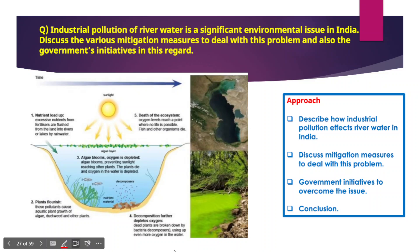Hello everyone, welcome to Bajirao IAS Academy. In the previous lecture we discussed a few questions from gender studies paper 2, and in this session we will be discussing a few more questions. The first question we are going to discuss is: industrial pollution of river water is a significant environmental issue in India — discuss the various mitigation measures to deal with this problem and the government's initiatives in this regard.